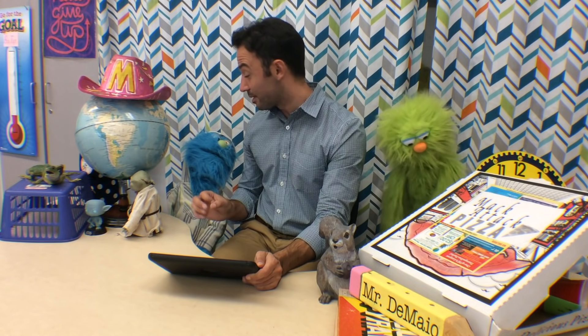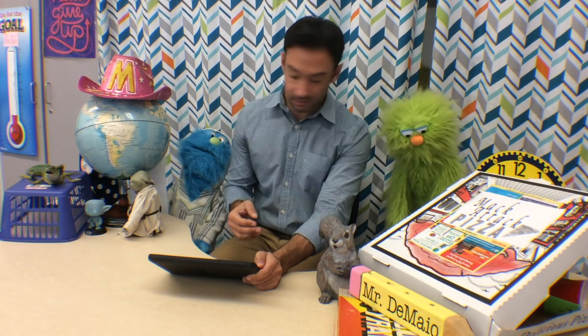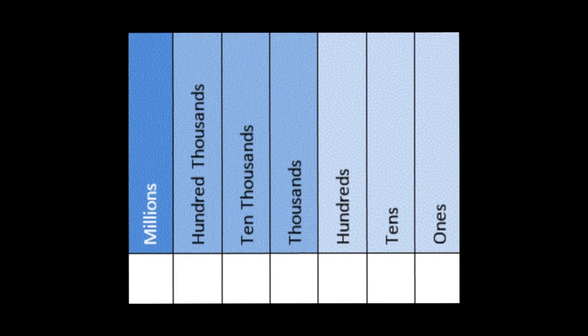The first thing you need to know in rounding is place value. Some kids may know it already, but let's just review it really quick. This is a place value chart — it tells the value of each number. So if you write the number 128, the 8 is in the 1's place, the 2 is in the 10's place, and the 1 is in the 100's place. You're going to need to know place value if you're going to round.